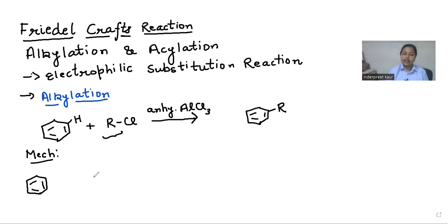Along with that, I have alkyl chloride, RCl, and anhydrous aluminium chloride. So these are the three things that I have. Now, first of all, if I look at this catalyst, that is AlCl3, let's talk about this.